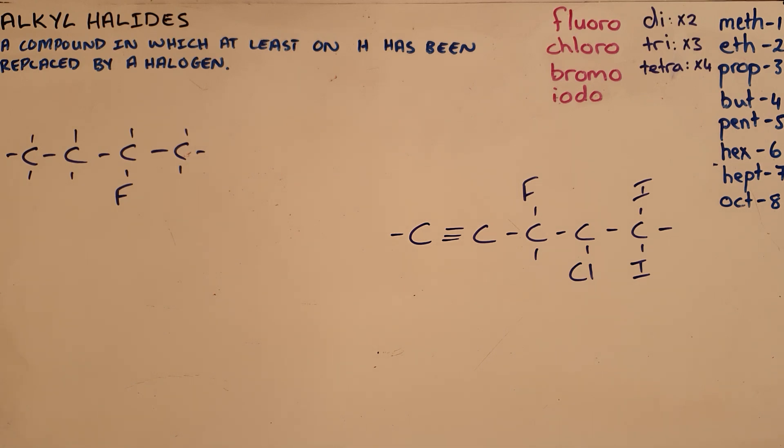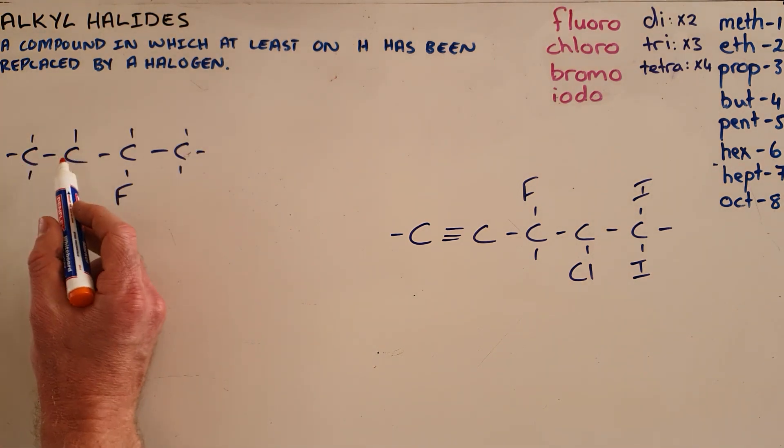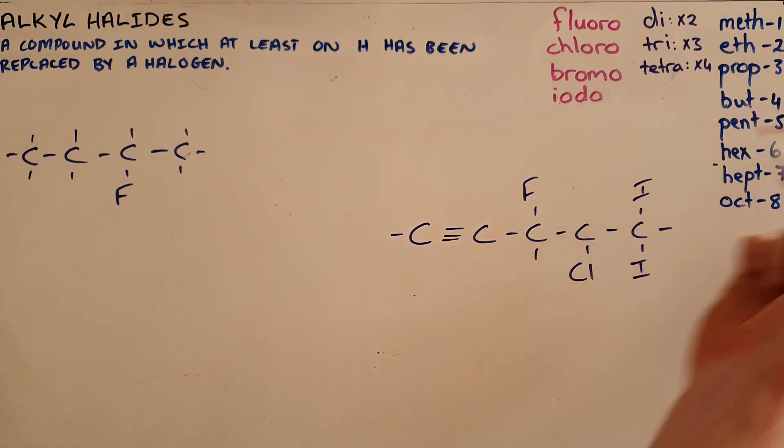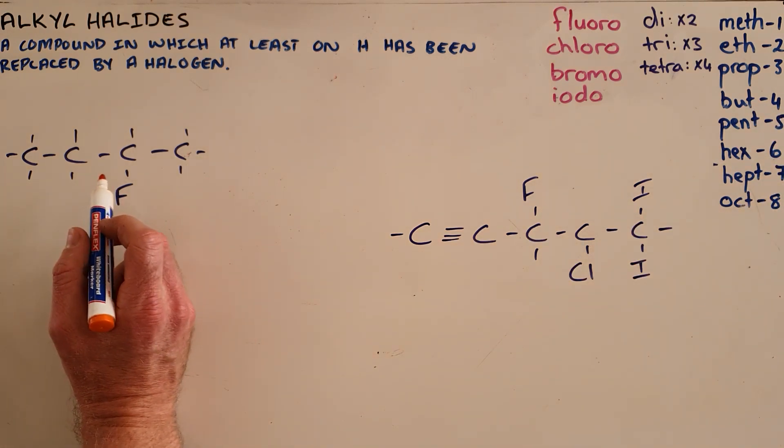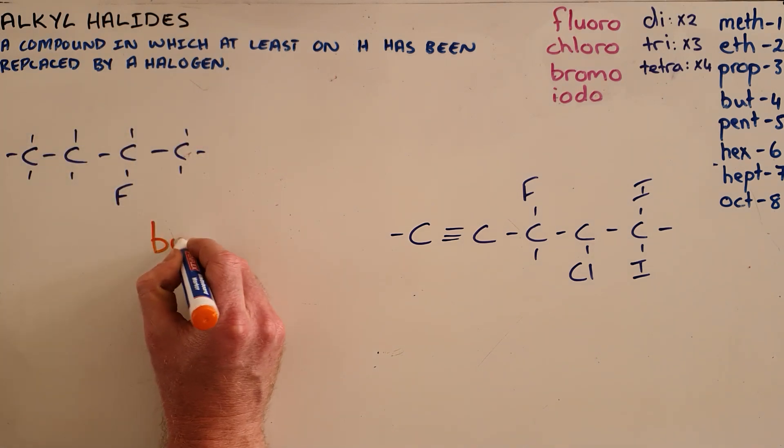of the compound by use of a prefix. We still name the carbon chain in exactly the same way. In this example, we have four carbons in the main chain, so it gets the prefix 'but'. It is an alkane since there are only single bonds, so it is therefore butane.